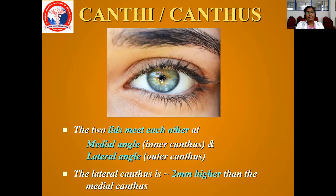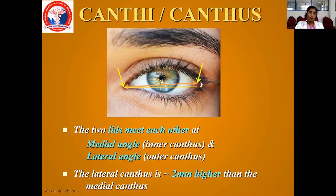Next is the canthus. The canthus is where the upper lid and the lower lid meet. We have one in the medial and one in the lateral side. The two lids meet together at the medial angle and lateral angle. The medial is your inner canthus and lateral is your outer canthus. One important thing: the lateral canthus is approximately 2mm higher than the medial canthus in Asians. Based on this, we say whether it is a mongoloid slant or anti-mongoloid slant — that is why this is important.